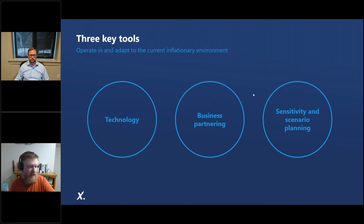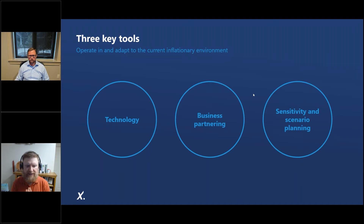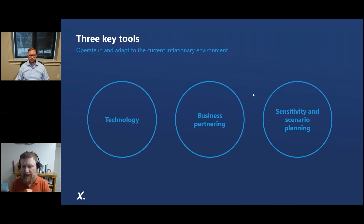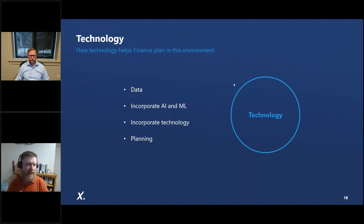The two biggest numbers we saw are 'sometimes' and 'we plan on doing it.' Now let's talk about the three key tools you really need in this environment. One is technology — companies that use technology, whether cloud-based or AI, showed much more confidence in their forecasts. Second is business partnering — finance can't be back office anymore, it needs to be front and center adding value. Third is sensitivity and scenario planning. Tim is going to talk about technology.